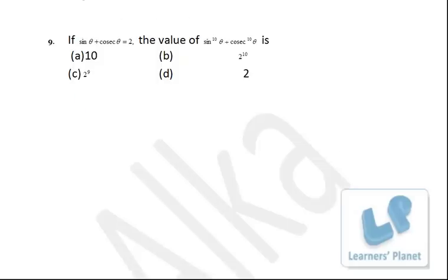Next: if sin θ + cos θ = √2, find sin¹⁰θ + cos¹⁰θ. Sin θ + cos θ = √2 only when both sin θ = 1 and cos θ = 1, i.e., θ = 45°. You don't need to solve the equation — that would be time-consuming. With θ = 45°: sin¹⁰(45°) + cos¹⁰(45°) = 1 + 1 = 2. The correct answer is 2.